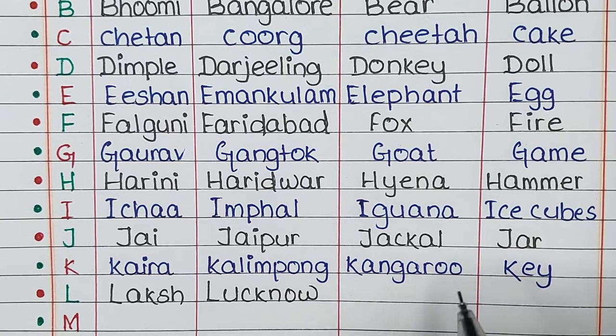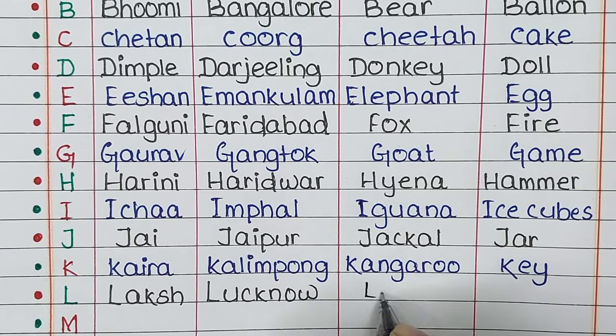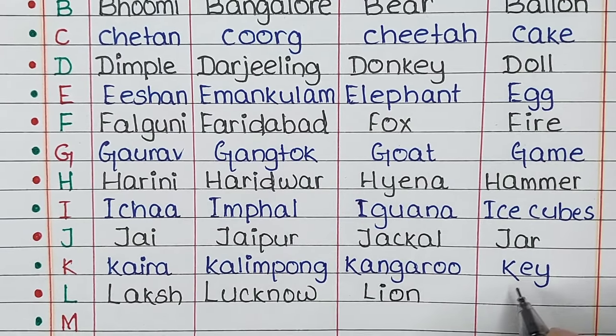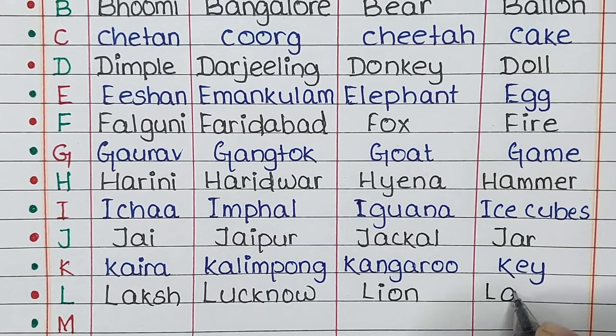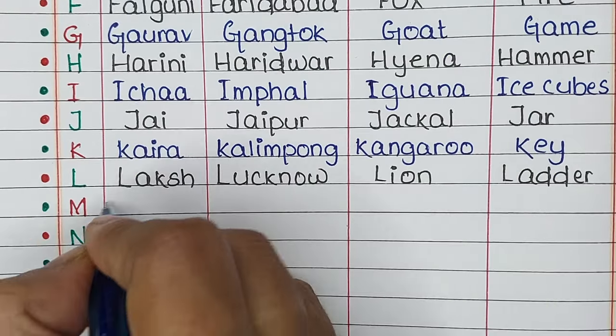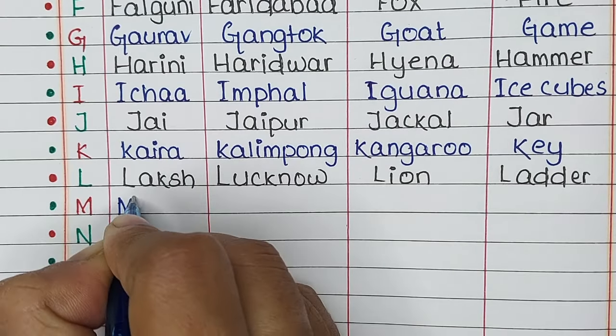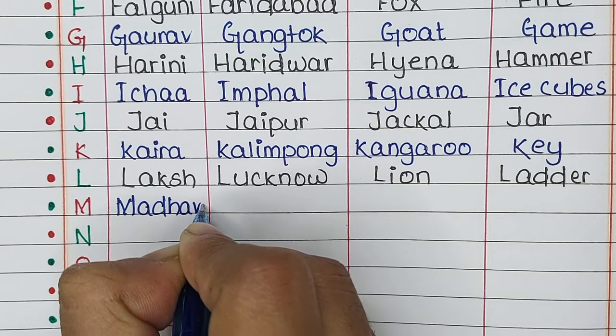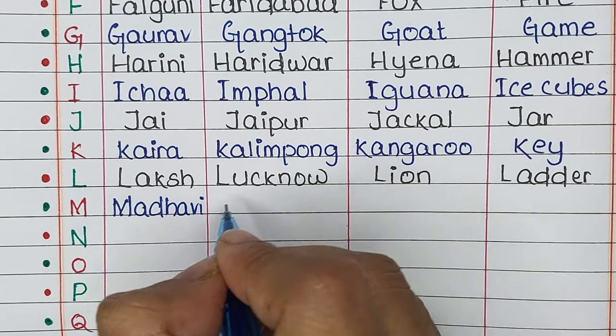Next is letter L. The name is Laksh, the place is Lucknow, the animal is Lion, and the thing is Ladder.